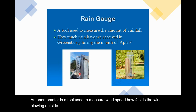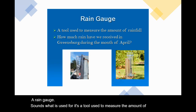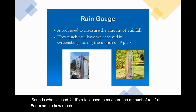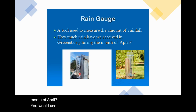A rain gauge does what it sounds like it is used for. It is a tool used to measure the amount of rainfall. For example, how much rain have we received in Greensburg during the month of April? You would use a rain gauge to find out.